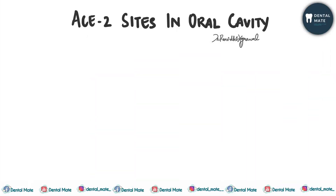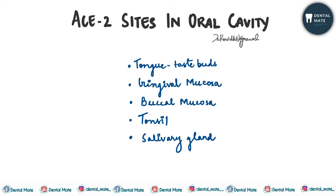First of all, as we know about the pathogenesis of COVID-19 disease, the S1 subunit of the spike protein of coronavirus has an affinity or domain which binds to the ACE2 receptors of the human host. In the oral cavity, ACE2 receptors are present in the taste buds of the tongue, gingival mucosa, buccal mucosa, tonsils, and salivary glands — most abundantly in the taste buds, tongue, and salivary glands.